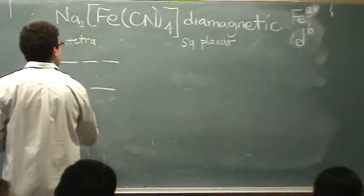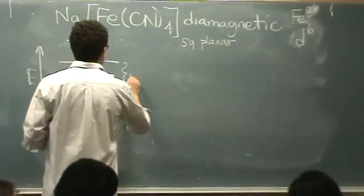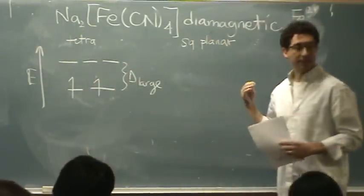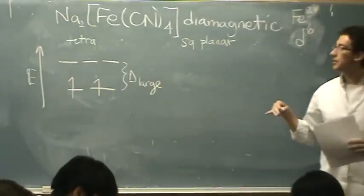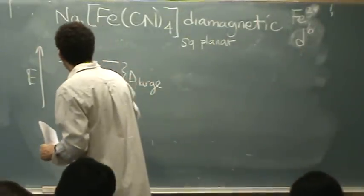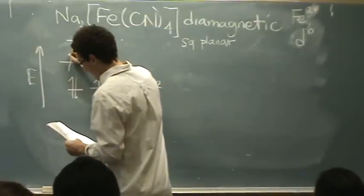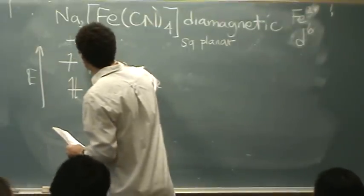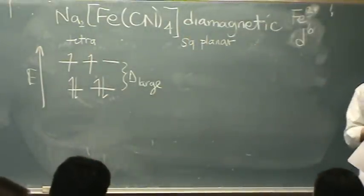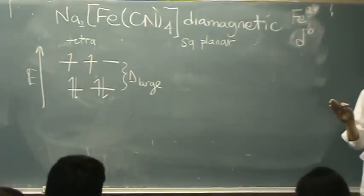So, in this case, that would be 1, 2. Remember, here's delta and it's large. I haven't drawn the other diagram yet. 1, 2. Since delta is large, the next one's going to go down. 1, 3, and then 4, 5, and 6. So, this is not diamagnetic, this is paramagnetic. And so, I'm going to cross this one out. This can't be the correct answer.